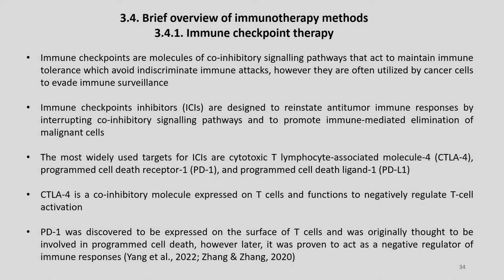Immune checkpoint therapy: immune checkpoints are molecules of co-inhibitory signaling pathways that act to maintain immune tolerance, which avoids indiscriminate immune attacks. However, they are often utilized by cancer cells to evade immune surveillance. Immune checkpoint inhibitors are designed to reinstate anti-tumor immune responses by interrupting co-inhibitory signaling pathways and to promote immune-mediated elimination of malignant cells. The most widely used targets for ICIs are cytotoxic T lymphocyte-associated molecule 4, programmed cell death receptor 1, and programmed cell death ligand 1.